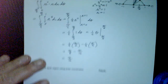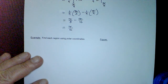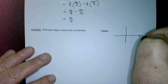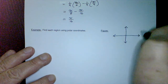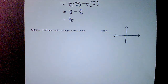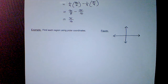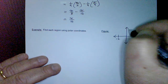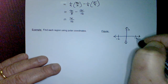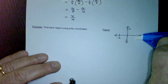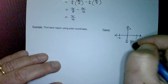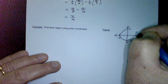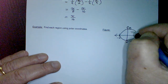For the final example, we find the area of regions inside a circle using polar coordinates. The figure shows a circle with radius 2, spanning from −2 to 2. We label the first-quadrant portion as Region 1, the second-quadrant portion as Region 2, and the entire bottom half as Region 3.